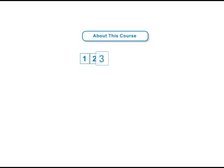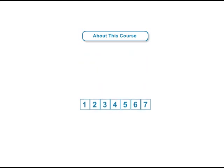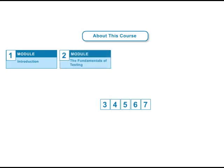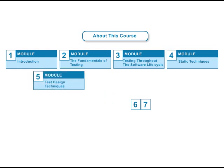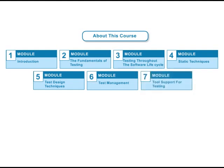The course is divided into seven modules, each subdivided into a number of sections. Each module focuses on a particular area of study. Specifically these are: Module 1, the introduction; Module 2, the fundamentals of testing; Module 3, testing through the life cycle; Module 4, static techniques; Module 5, test design techniques; Module 6, test management; and finally Module 7, tool support for testing.